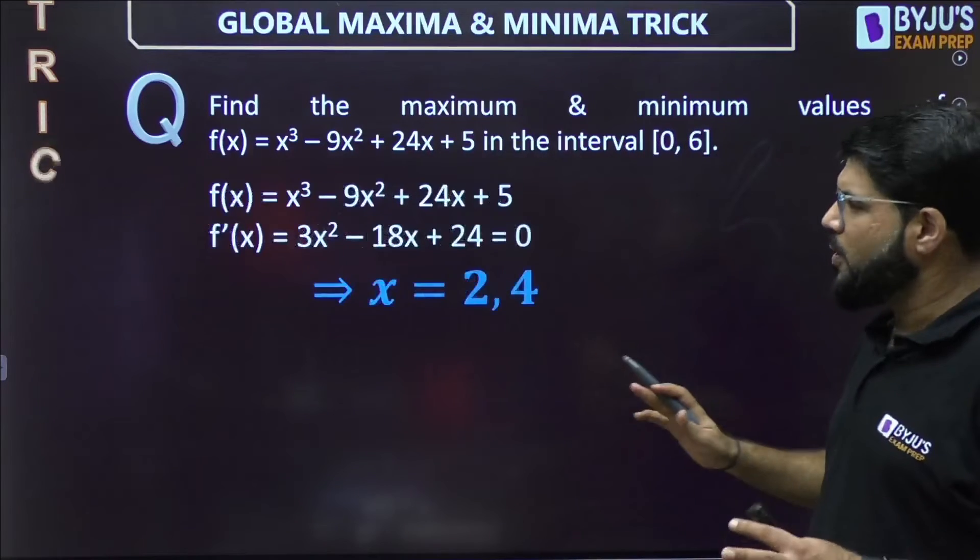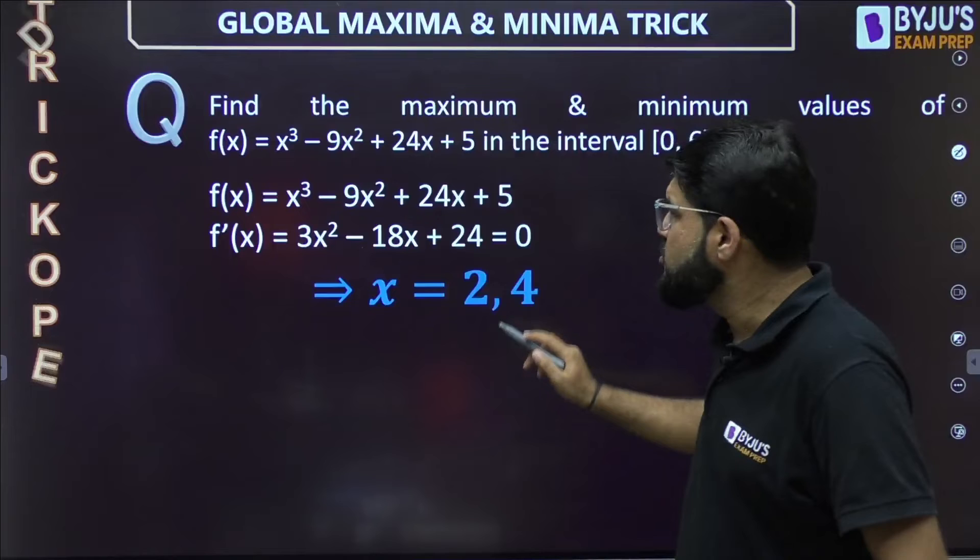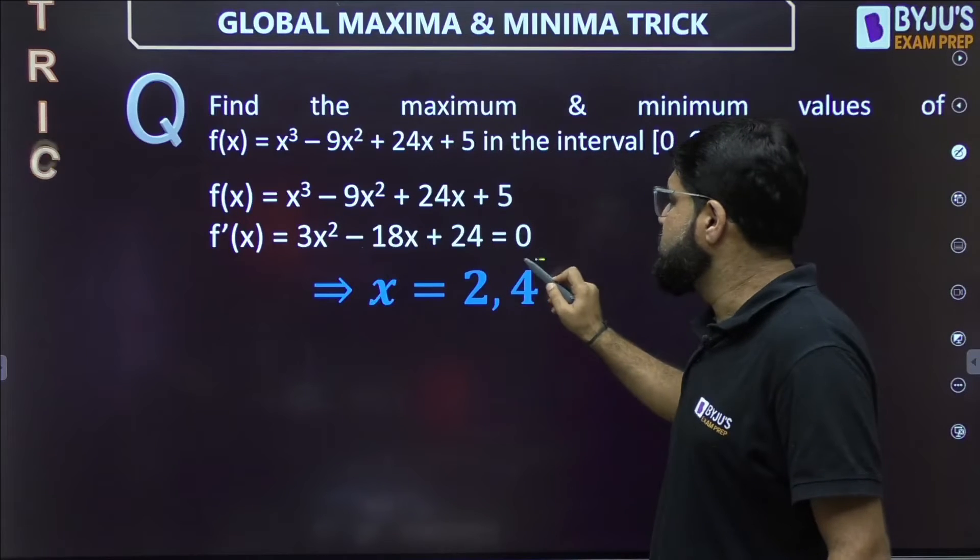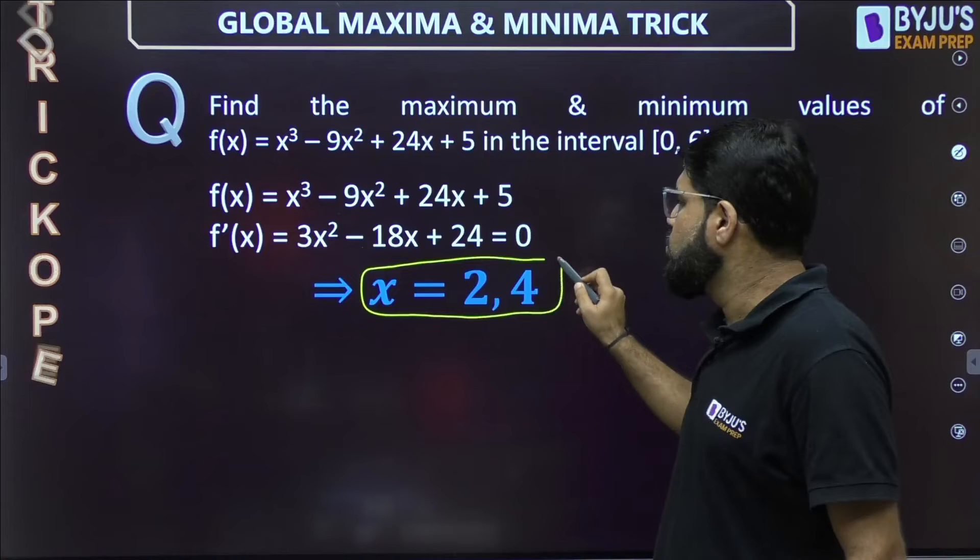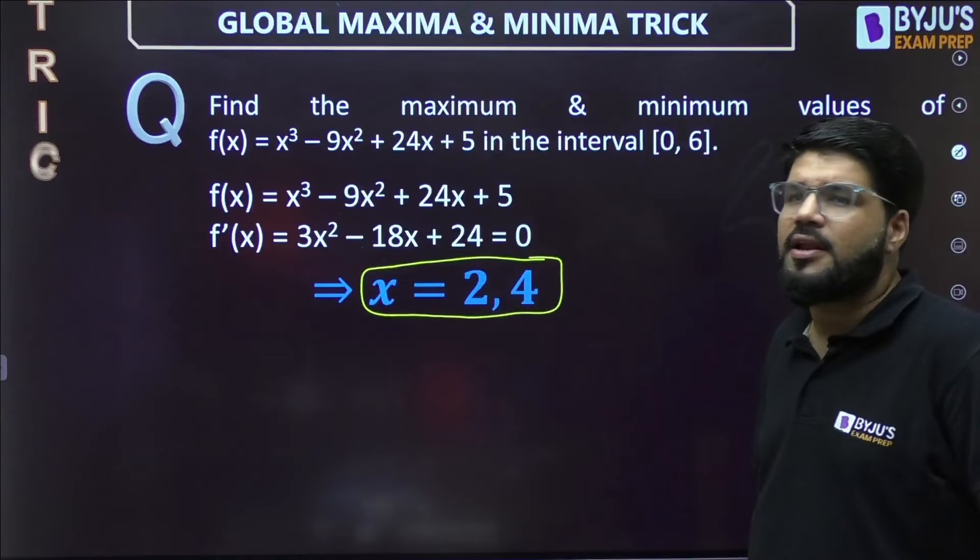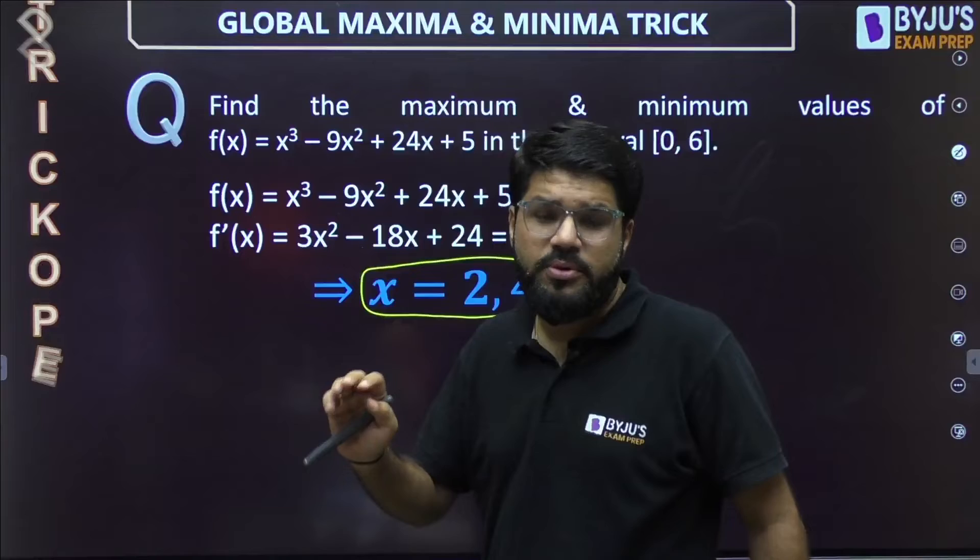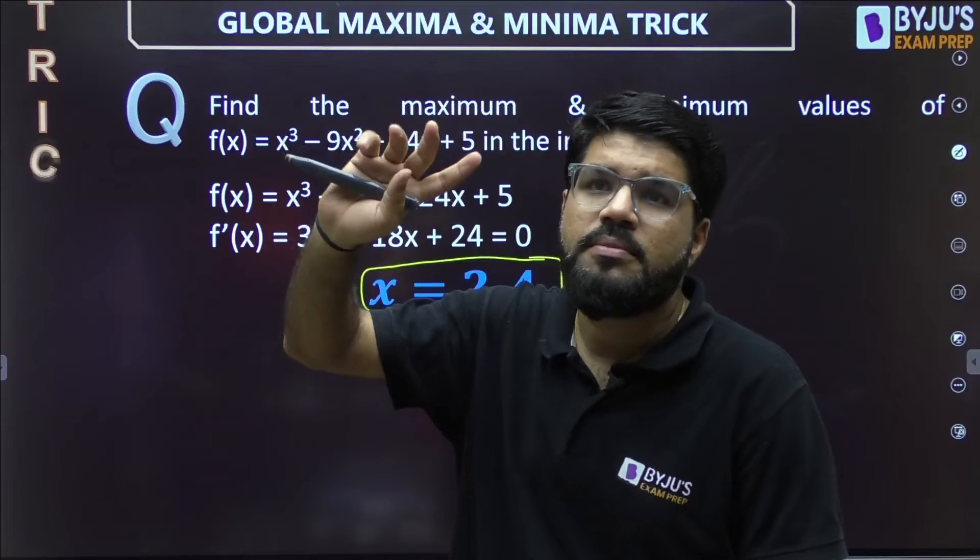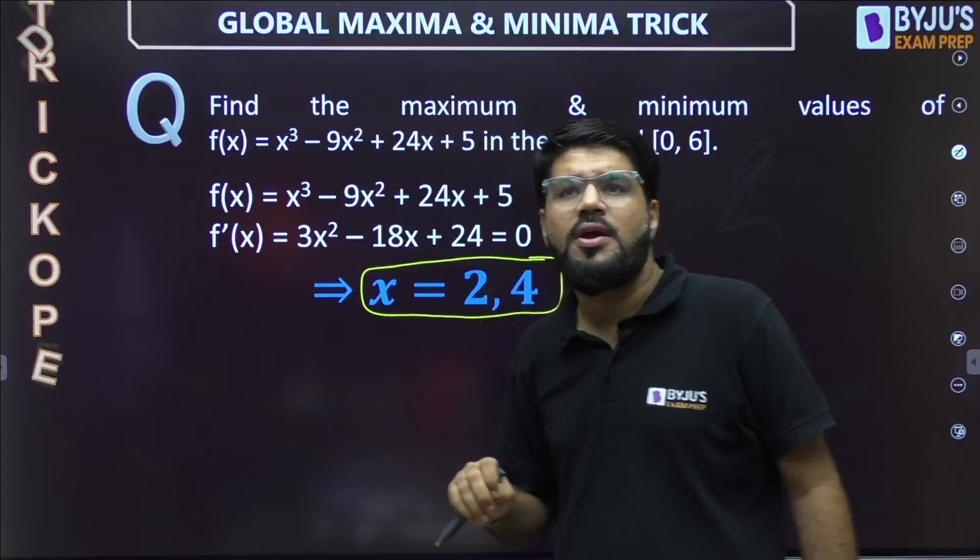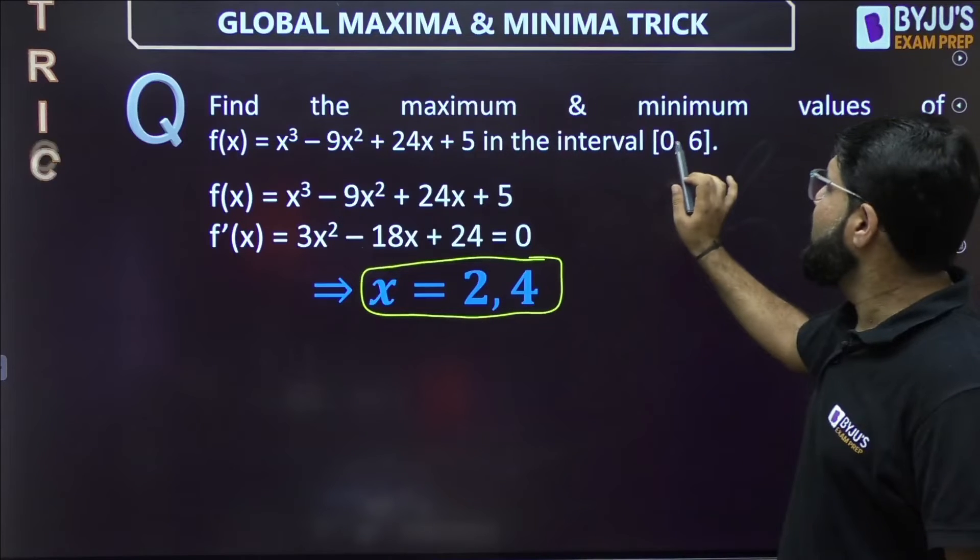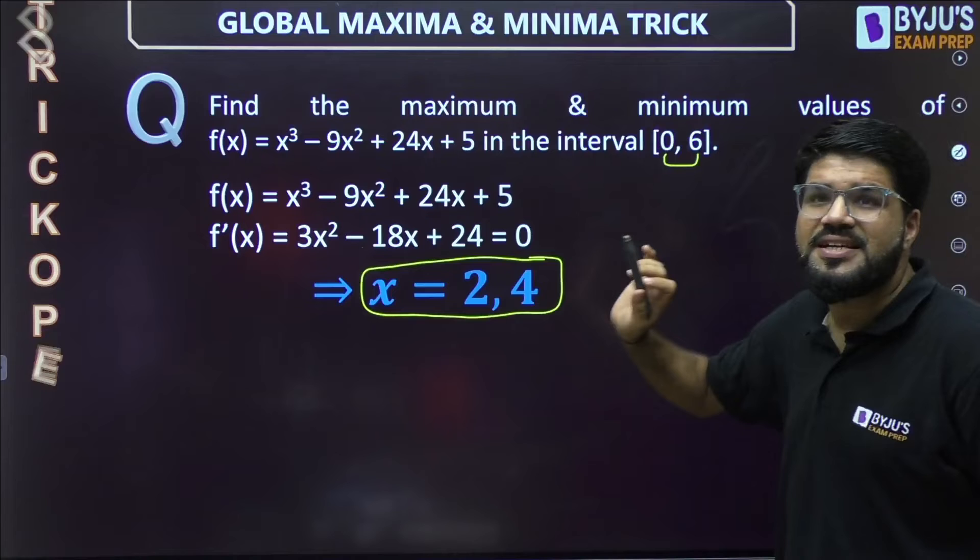Let us calculate the stationary points first of all by f'(x) = 0. By derivative equal to 0, you are going to get these roots x = 2, 4—simple factorizable equation or you can use the quadratic formula. So I have two stationary points. Don't even confirm which is local maxima, which is local minima. The direct shortcut: what you have to do is calculate the value of the function at these two points. That's it.